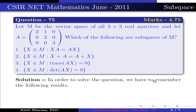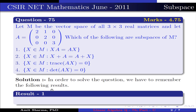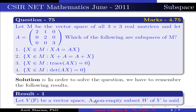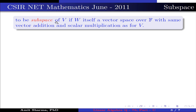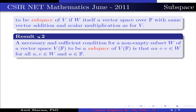In order to solve the question, we have to remember the following results. Result number 1: let V over F be a vector space over the field F. A non-empty subset W of V is said to be a subspace of V if W itself is a vector space over F with the same vector addition and scalar multiplication as for V. Result number 2: a necessary and sufficient condition for a non-empty subset W of a vector space V over F to be a subspace of V is that αu + v belongs to W for all u, v belonging to W and α belonging to F.